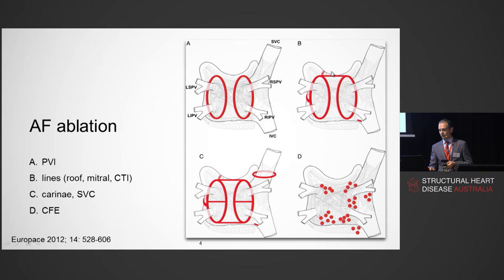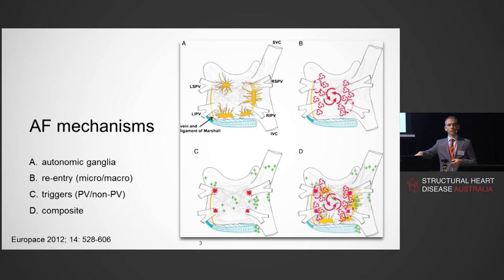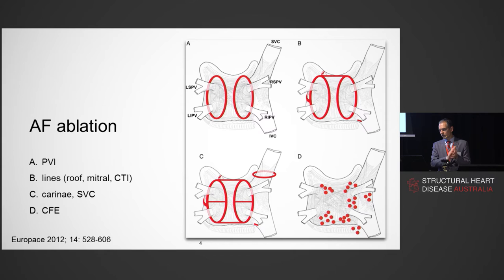We can then become more aggressive with ablation by creating lines — a left atrial roof line, a mitral line, an anterior line, or a cavotricuspid isthmus line if typical atrial flutter is present. We can also isolate the SVC, which can sometimes drive AF, ablate the coronary sinus, and target CFE — complex fractionated electrograms — though that was once in vogue but is less commonly performed today.